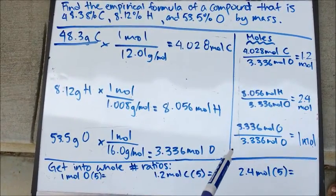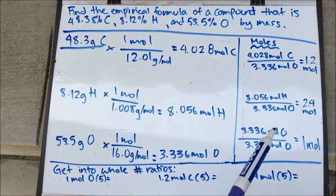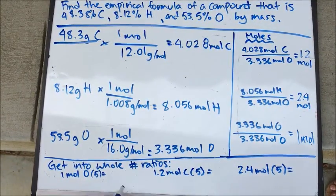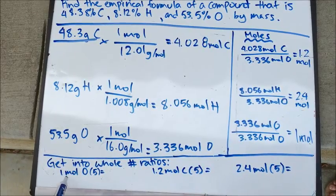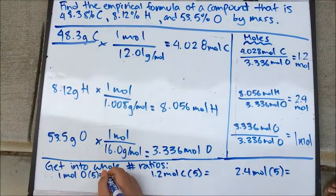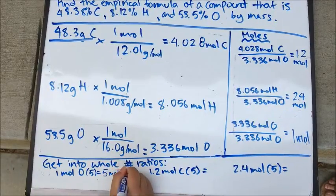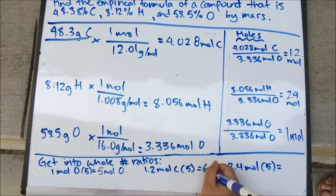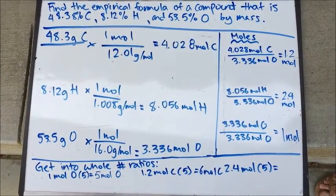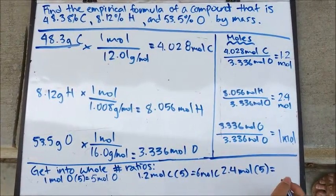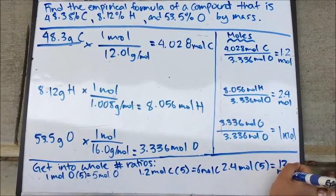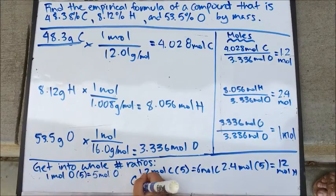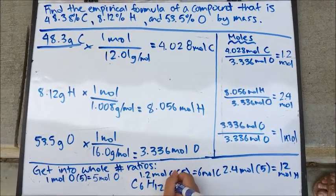After you get these ratios, turn them into a whole number ratio. The only way to do that is by multiplying them by 5. So 1 mole of oxygen times 5 equals 5 moles of oxygen. 1.2 moles of carbon times 5 equals 6 moles of carbon. And 2.4 moles of hydrogen times 5 gives you 12 moles of hydrogen. From this, you can write the empirical formula, which is C6H12O5.